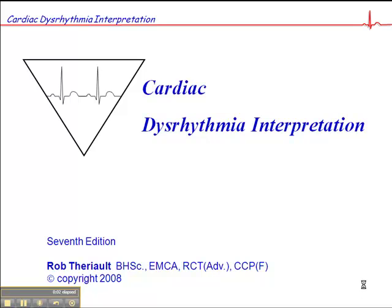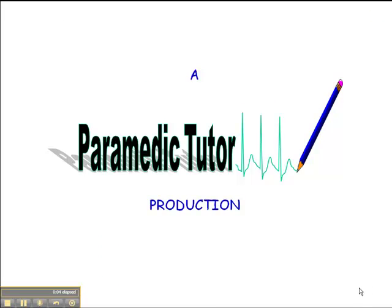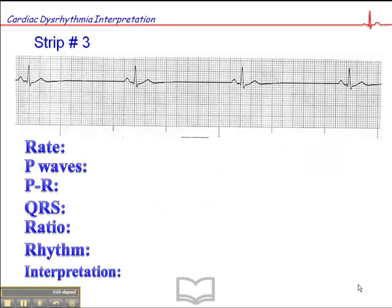This next ECG exercise is number 3 on page 85 of your workbook. And starting with the rate, the rate is approximately 30.